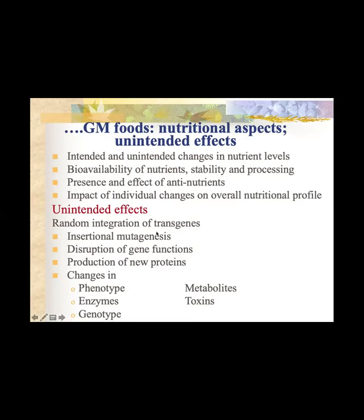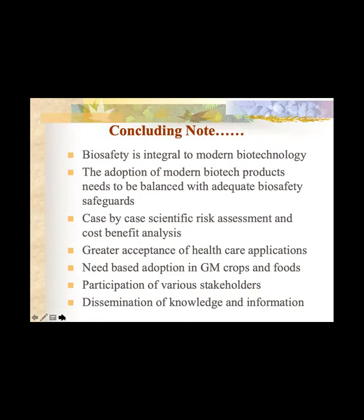Unintended effects must be checked: random integration of transgenes, insertion mutagenesis, disruption of gene function. You are targeting a certain gene, but if unintended changes occur during genetic engineering, you must confirm by using laboratory PCR and sequencing techniques. You must ensure that no disruption of gene function occurs and no unintended new proteins, phenotype, enzyme, genotype, toxin, or molecular metabolites are altered in the target organism except for your desired change. So biosafety is integral to modern biotechnology.